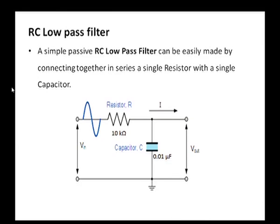A simple RC low-pass filter can be constructed using a resistor connected in series with a capacitor, as shown in the figure. Here, a resistor of value 10 kilo-ohm and a capacitor of value 0.01 microfarad are connected in series to construct the low-pass RC filter. The input signal from the function generator is applied at the input, and the output is taken across the capacitor of 0.01 microfarad.